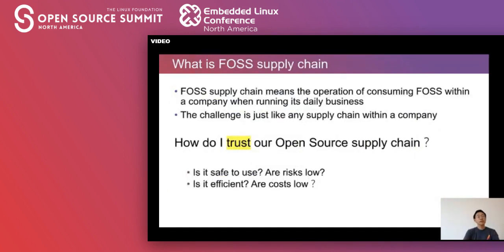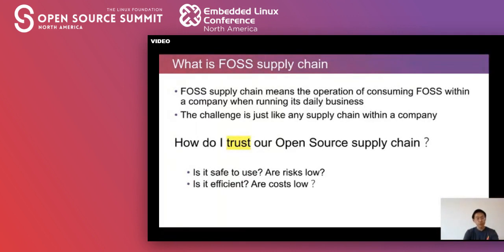What is full supply chain? First supply chain means the operation of consuming free open software within a company when it runs daily businesses. The challenge is just like any supply chain within a company: how do I trust my own open source supply chain? Is it safe to use? Are risks low? Is it efficient? Are costs unknown?